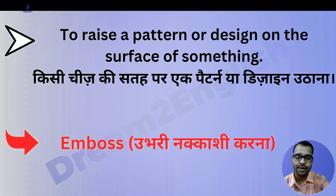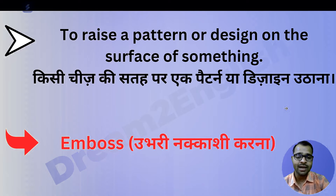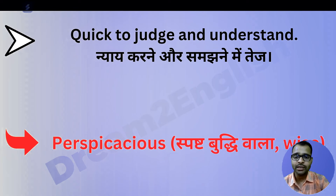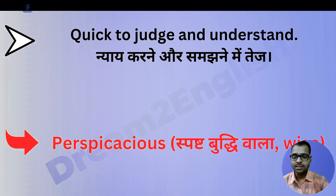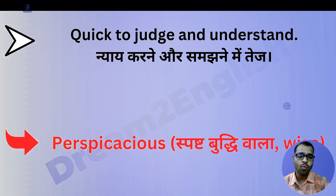Next one is quick to judge and understand — niai karne aur samajhne mein tez — this is called 'perspicacious' — tez buddhi wala, wise.